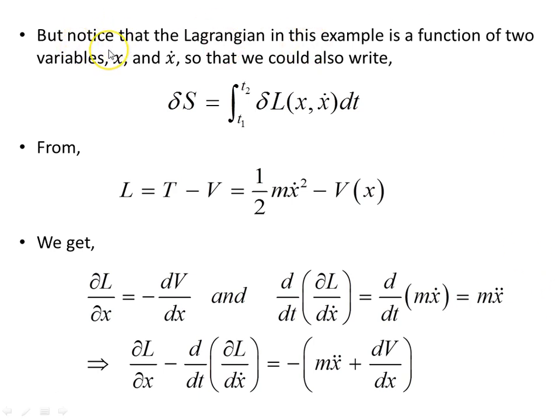And that shows some of the power of using variation of the action. The action is a very important quantity for deriving physical laws. But we can go a little bit further with it. Notice the Lagrangian in this example is a function of two variables, x and x dot. So that we could also write the variation of the action as the integral of the variation of the Lagrangian, which is a function of x and x dot.